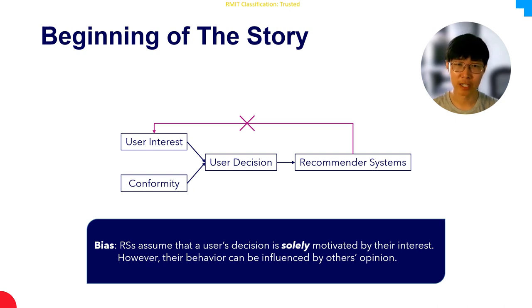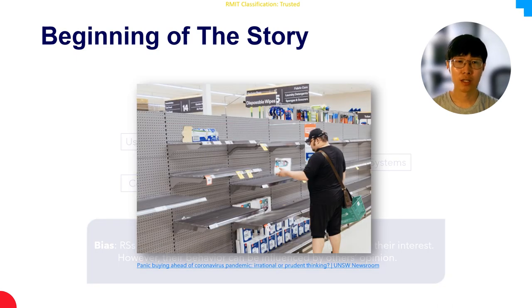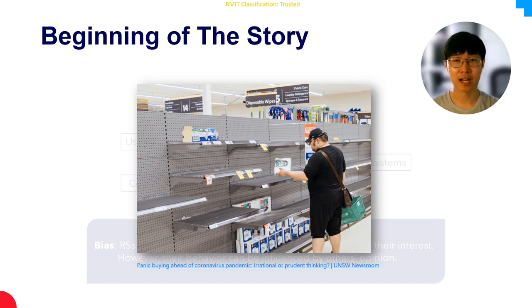And also, it can be further amplified by the feedback loop issue. Panic buying is a typical example during a pandemic — people imitate others' behavior and buy a lot of stuff they may not necessarily need.